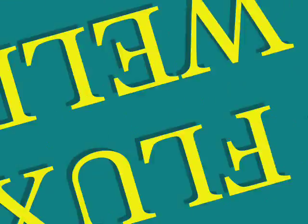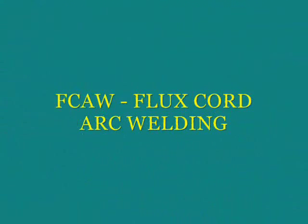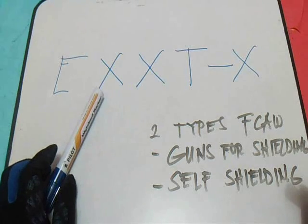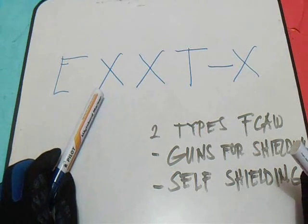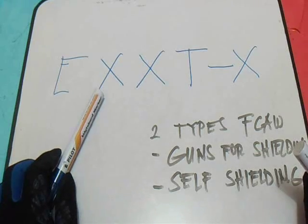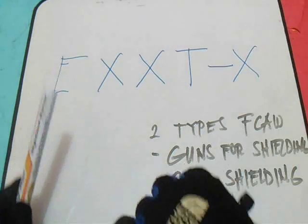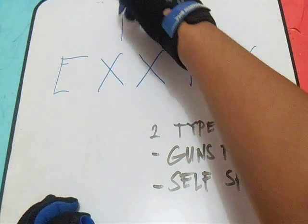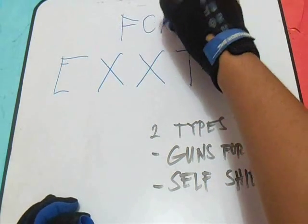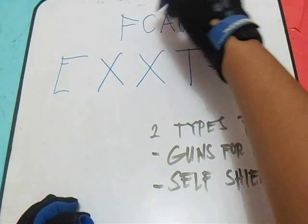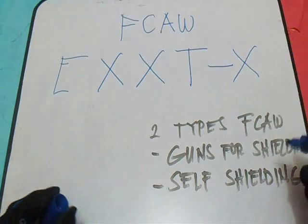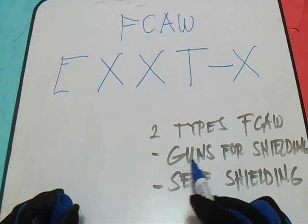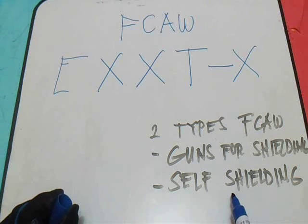What is FCAW? FCAW stands for Flux Core Arc Welding. These are the two types of FCAW: gas shielding and self-shielding.